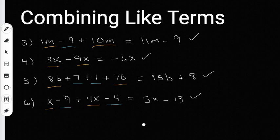And that's it — that's combining like terms. All you're really doing is putting like terms together by addition or subtraction. You put terms that end with the same variable together, and then you put the regular numbers together. And that is combining like terms. I hope that helps.